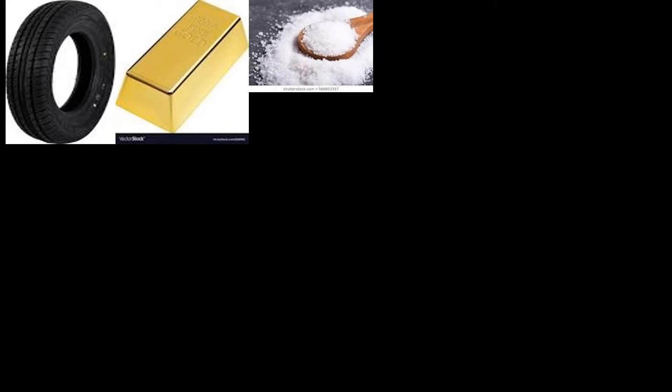The first and most important postulate Dalton proposed is: all kinds of matter are made up of small and tiny particles called atoms. The word 'atom' is derived from the Greek word 'atomio,' which means indivisible. He considered the atom as indivisible, and some great Greek scientists and Indian philosophers around 500 BC also considered the atom or 'parmanu' as the indivisible part of matter.